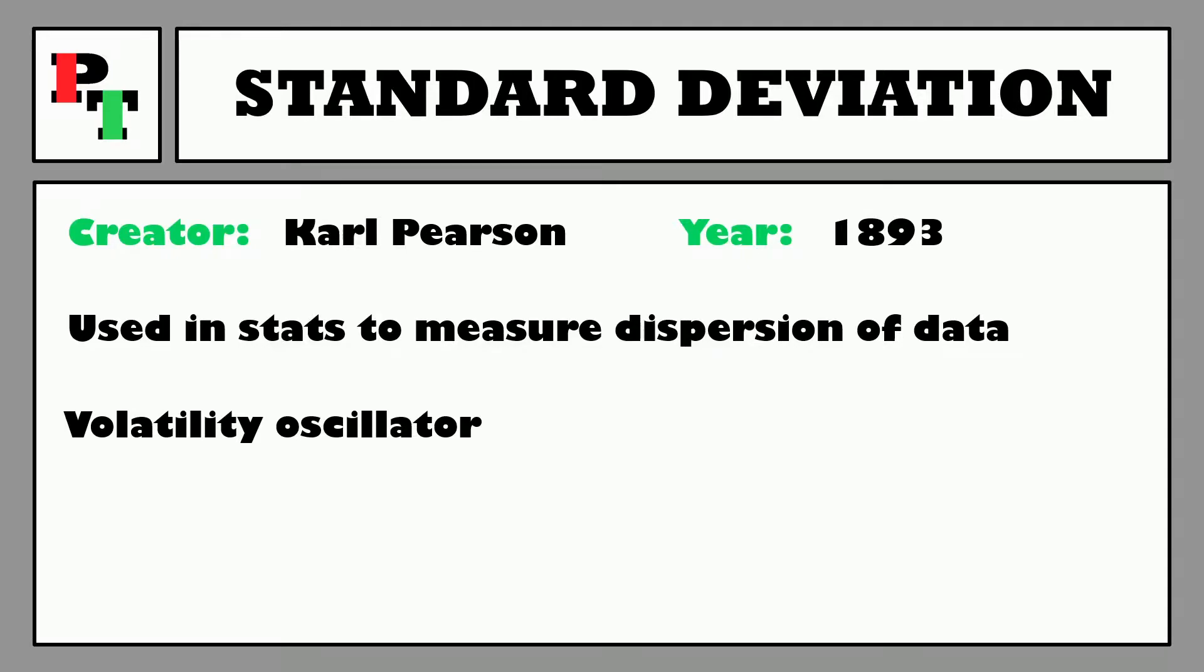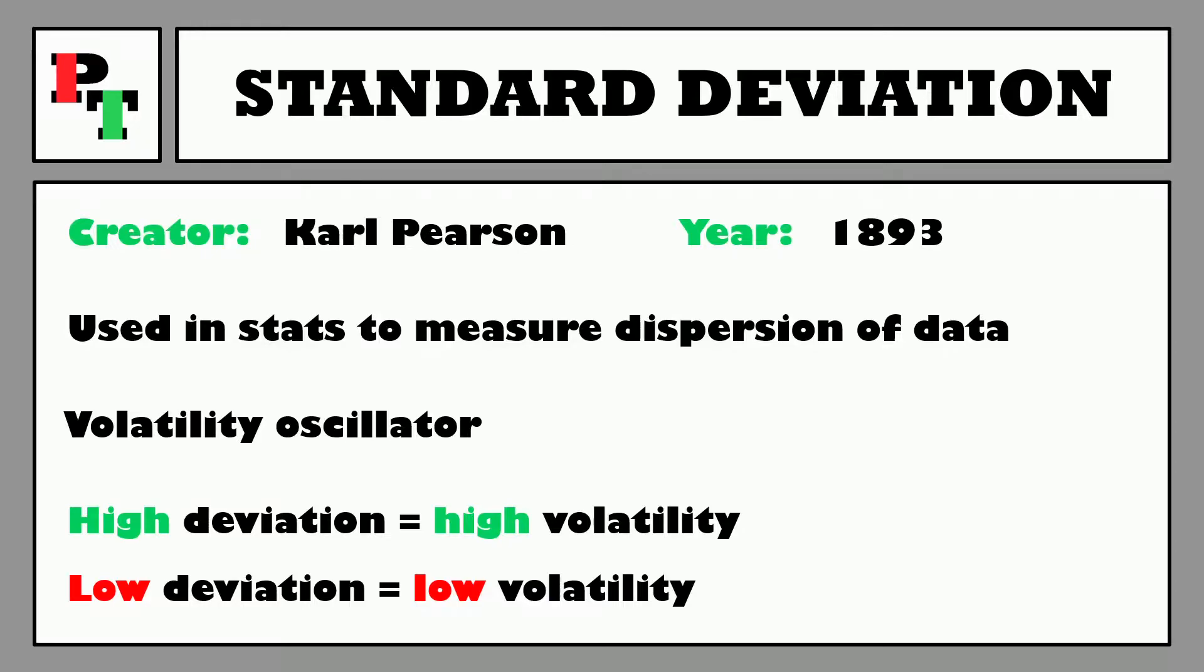For example, the price of gold is incredibly different to the price of bitcoin. But the general idea across all assets is that if the standard deviation indicator shows a relatively high deviation reading, that means there is higher price volatility. If there's a low deviation reading, then there's lower price volatility.